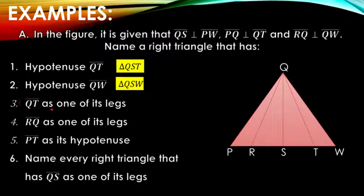Next, side QT is one of its legs. Where is QT? What right triangle can we form if QT is one of the legs of our triangle? Again, triangle PQT.